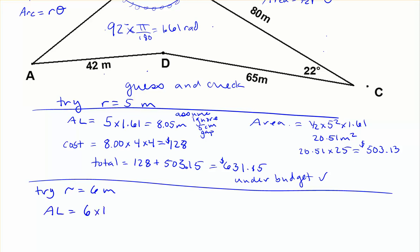With the radius of 6, the angle is still the same. So for this, we get 9.66 meters. And for my area, 1/2 times 6 squared times 1.61 is equal to 28.98 meters squared.